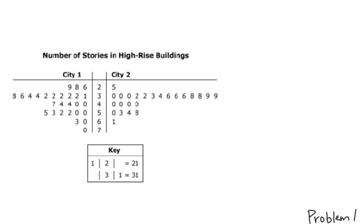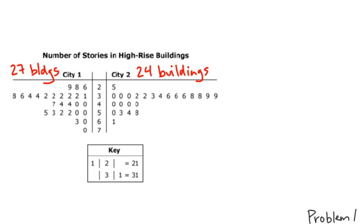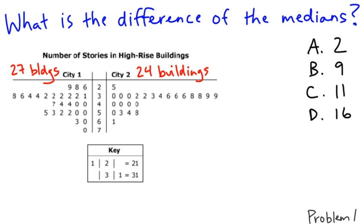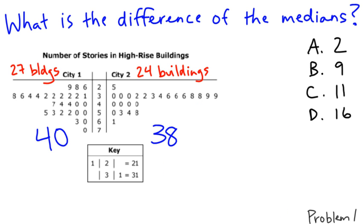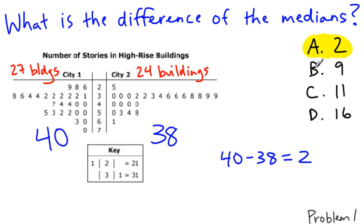So now we're on to problem one. They've given us some data here about city one and city two — these are how many stories are in their high-rise buildings. City one has 27 buildings that are high-rise; city two has only 24. We ask: what is the difference of the medians? The median of the first city is 40, the median of the second is 38, so the difference is 2. The correct answer is A.